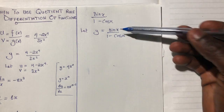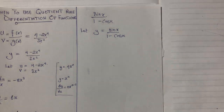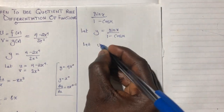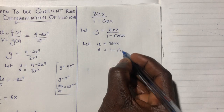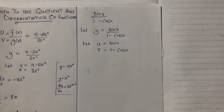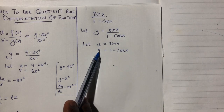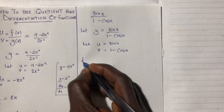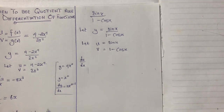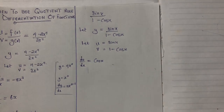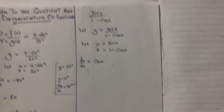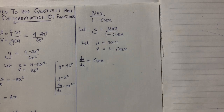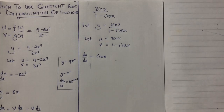From there I'll represent my numerator with u and the denominator with v. So let u be equal to sin(x) and let v be equal to (1 minus cos x). We differentiate u with respect to x and v with respect to x. So du/dx gives cos(x). Note that when you differentiate sine you get cos(x).